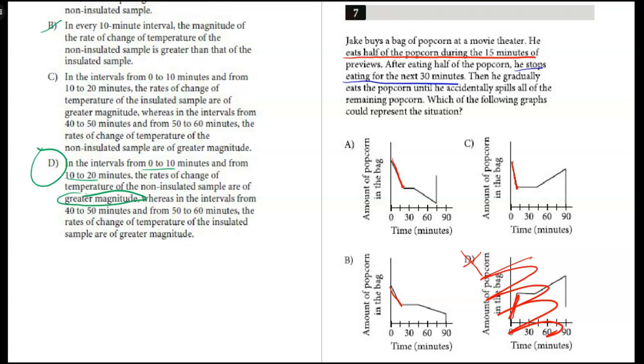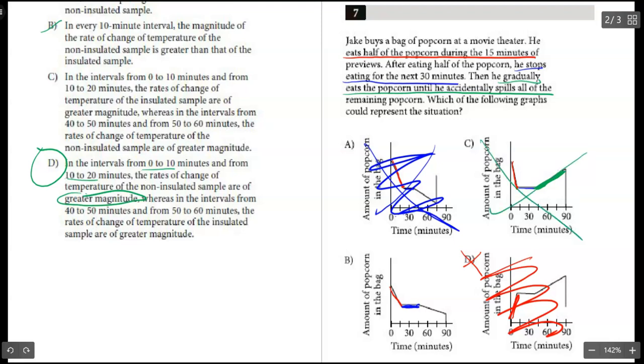The next part: after eating half the popcorn, he stops eating for the next 30 minutes. So that means the amount should remain unchanged. Well, this stops eating doesn't quite look like it goes for a full 30 minutes because each increment down here is 15, so I'm going to mark A out. C looks like he stops eating, and B looks like he stops eating for 30 minutes, so I think we still have B and C going. Then he gradually eats the popcorn until he spills it. If he gradually eats the popcorn, this is showing that more popcorn is being put into his bowl, like somebody's giving him some, so C is out. Here's where he gradually stops eating it and then he spills it really fast. So the correct answer is B.